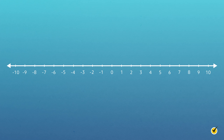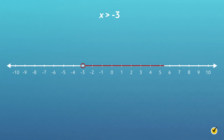Let's try another one. Graph the solution set for the inequality x is greater than negative 3. If x is greater than negative 3, then all possible solutions for x have to be numbers that are greater than negative 3. Pause the video here, draw a number line, and see if you can graph this one yourself. Looking at the number line, there is an open circle directly above negative 3. From negative 3, there is a line extending to the right with an arrow at the end, showing all numbers greater than negative 3.